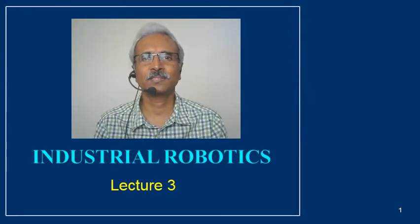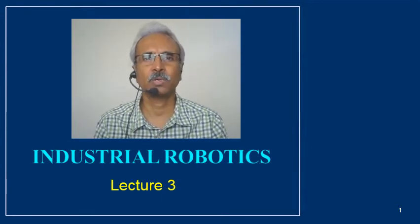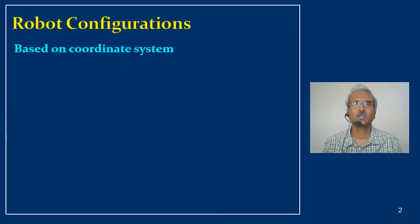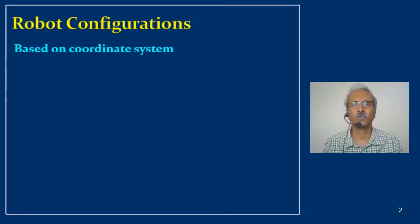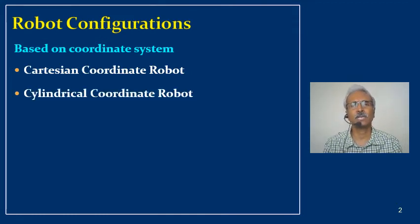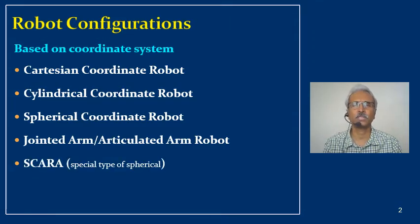Welcome to Lecture 3 of the course Industrial Robotics. Recalling Lecture 2, we discussed the classification of robots based on type of system and control system. This lecture is a continuation — here we are going to classify robots based on the coordinate system. The types are: Cartesian coordinate robot, cylindrical coordinate robot, spherical or polar coordinate robot, jointed arm or articulated arm robot, and SCARA, which is a special type of cylindrical robot.